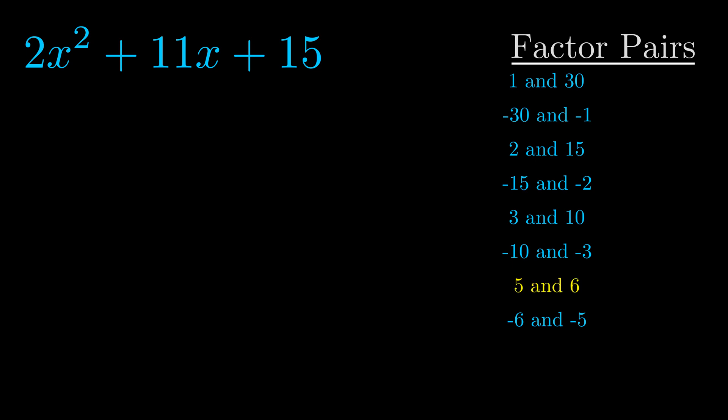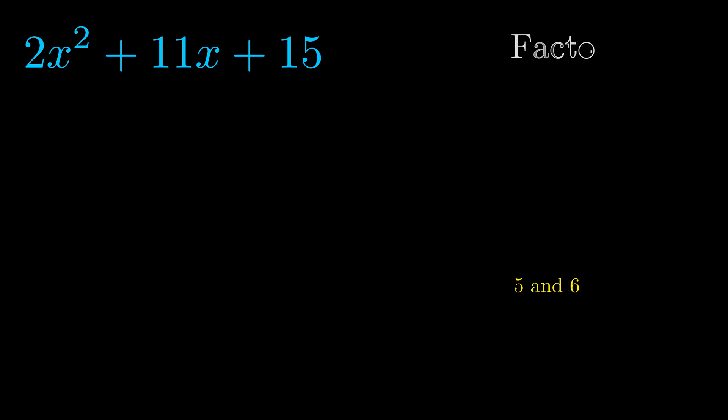And really this is the only factor pair that we need. Now once we have this factor pair what we want to do is use it to split up the b value.